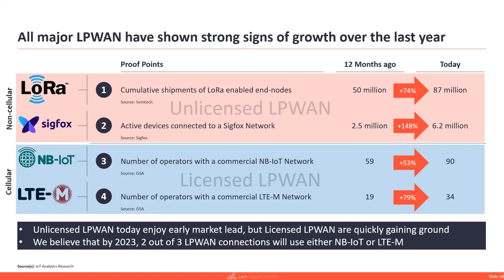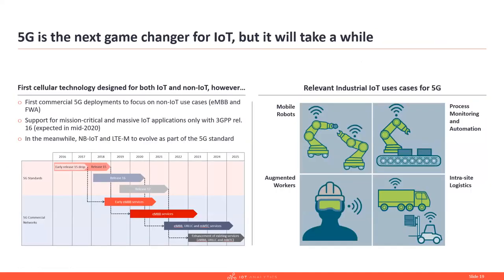5G is considered a potential game changer for IoT, but despite what you may have heard, it's going to take a while — especially for IoT. Initial 5G deployments are focused on non-IoT scenarios: enhanced mobile broadband and fixed wireless access. The first release, 5G Release 15, only covers these two scenarios. We'll have to wait for Release 16, expected sometime in 2020, for operators to start deploying networks that could address critical IoT and massive IoT scenarios. We believe this won't happen before 2021-2022 at the earliest.